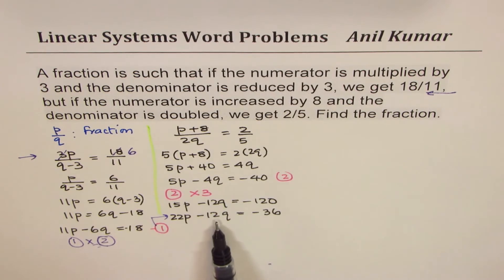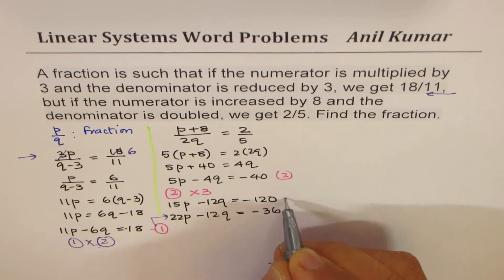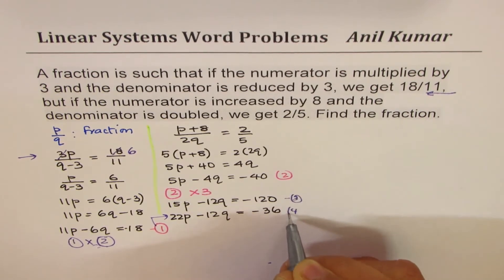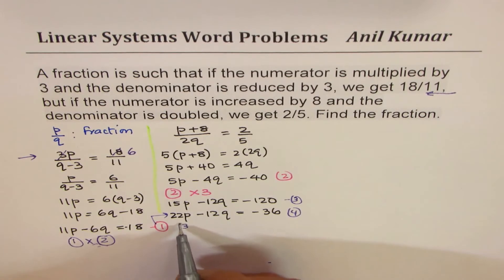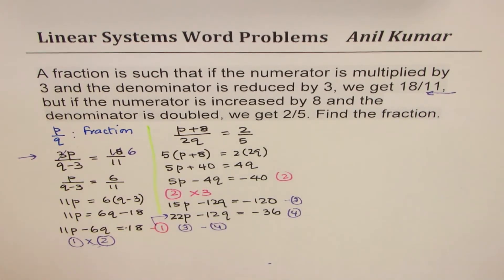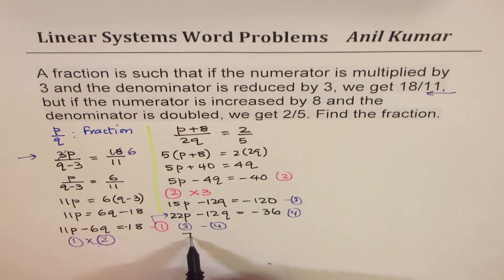As you can see, these two q's, if we subtract, we could eliminate. So we have equation 3 and 4 now, so now we can do equation 3 minus equation 4. So we do this subtraction. So if I do 15 minus 22, we get negative 7. So we get negative 7p.